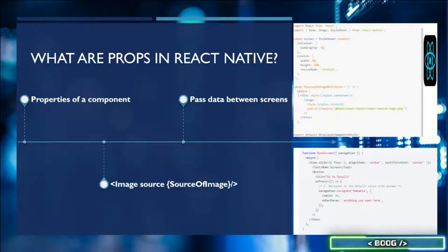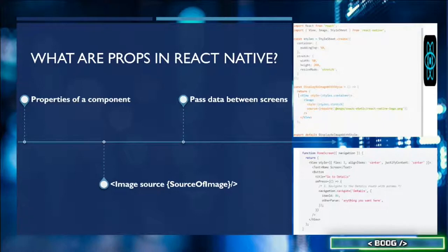Props are also commonly used for passing data between screens or functions. Let's say that I have to log in on the first screen of the app. I would enter my information and then log in. Once it brings me to a new page, I want the app to say 'Welcome Boog.' To get the name to update when a different person logs in, we could pass the username as a prop to the next screen so that it can update.